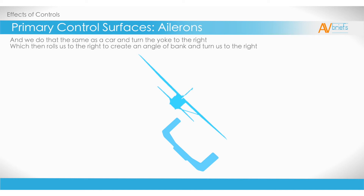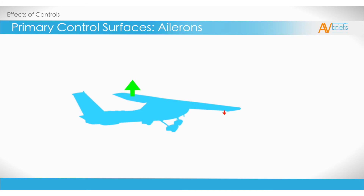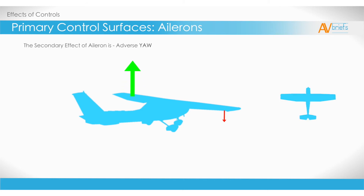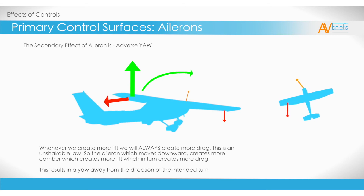There is a trade-off happening when we do this. The secondary effect of aileron is called adverse yaw. Whenever we create more lift, we will always create more drag — this is an unshakable law. So the aileron which moves downward creates more camber, which creates more lift, which in turn creates more drag. This results in a yaw away from the direction of the intended turn.